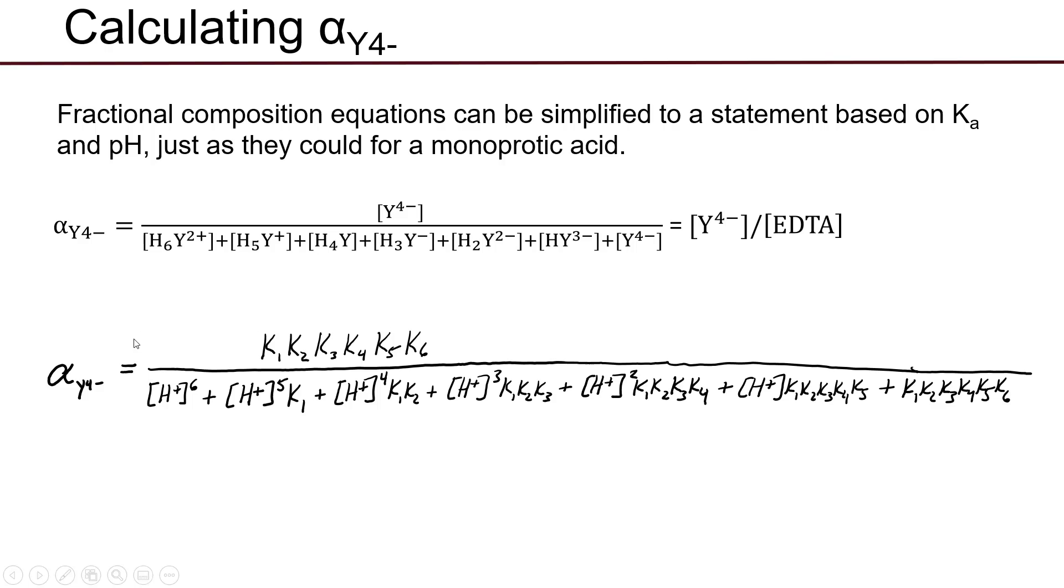The standard equation for the alpha Y4- value of EDTA is equal to the product of all six deprotonation constants, so Ka1 times Ka2 times Ka3 times Ka4 times Ka5 times Ka6. That's your numerator.